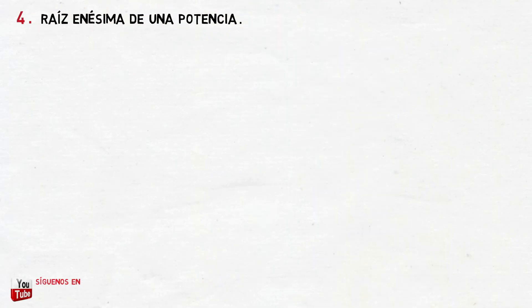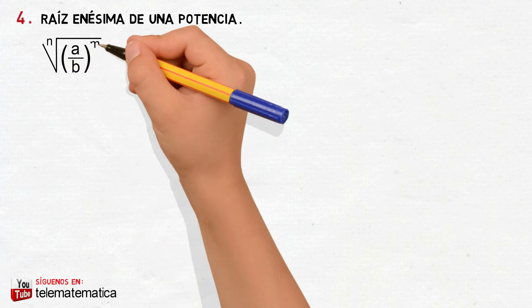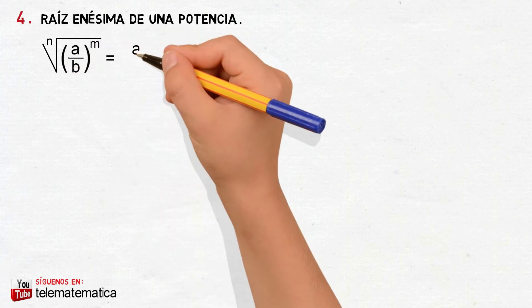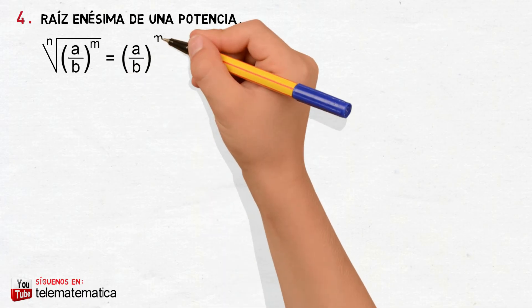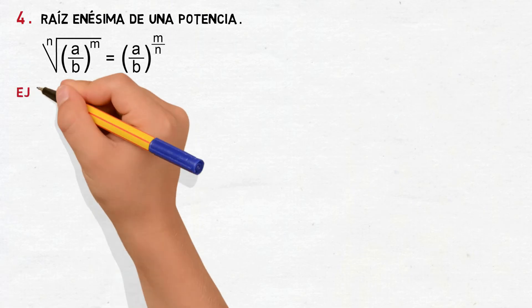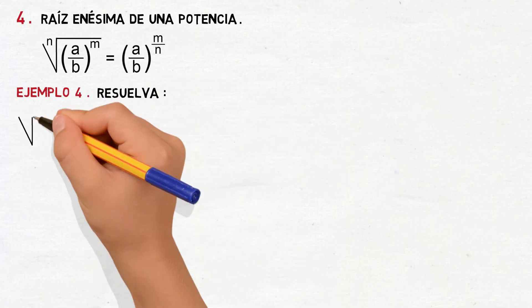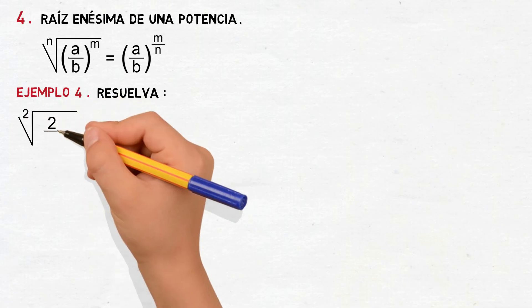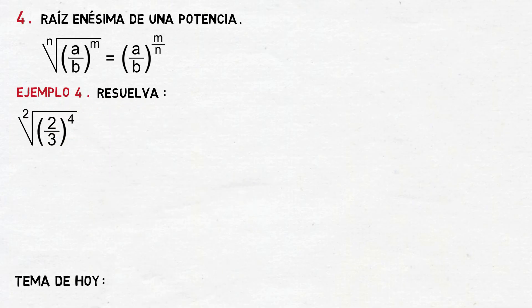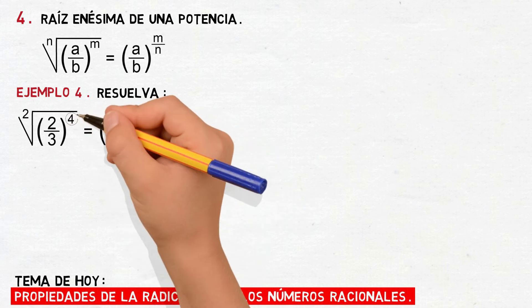Propiedad número 4: raíz enésima de una potencia, que se define como raíz enésima de A dividido para B elevado a la M. Esto va a ser igual a conservar la base A dividido para B, y como exponente el cociente entre el exponente M dividido para el índice N. Veamos un ejemplo: raíz cuadrada de 2 tercios elevado a la cuarta. Aplicando la propiedad, esto va a ser igual a conservar la base 2 tercios y como exponente el cociente entre el exponente 4 dividido para el índice 2.